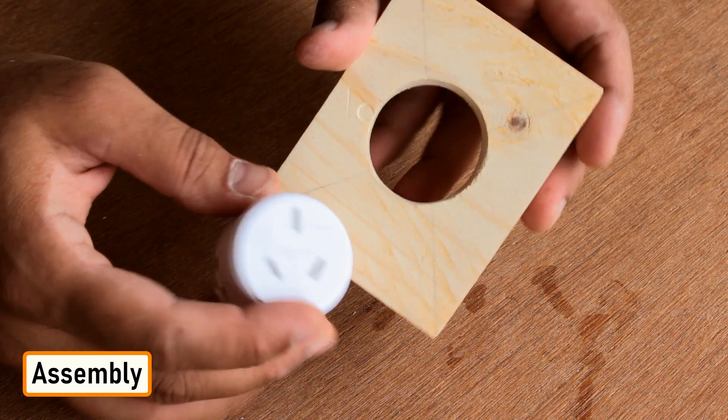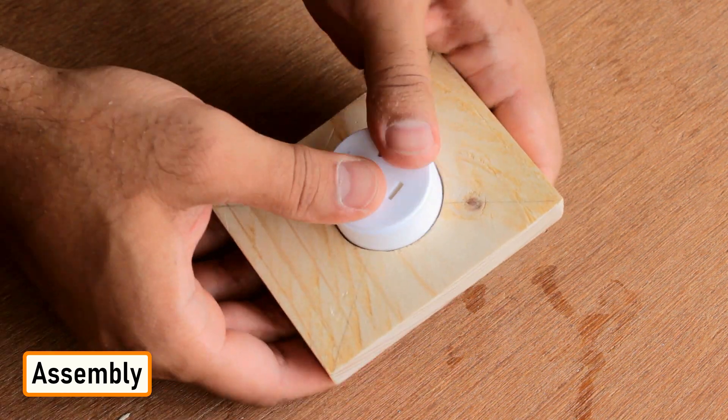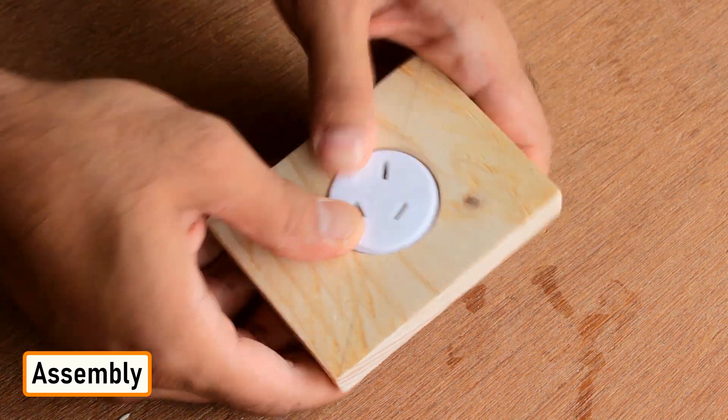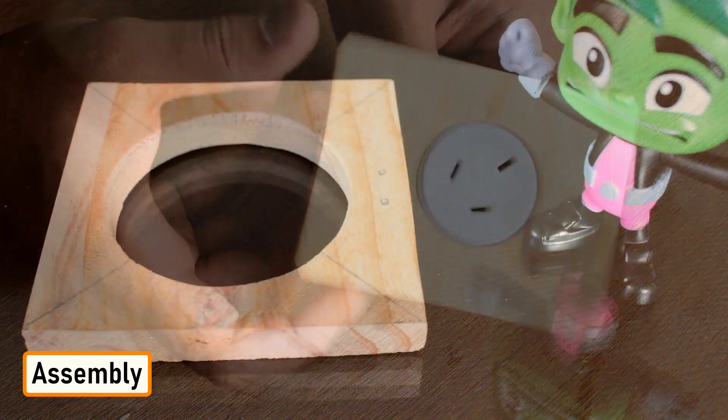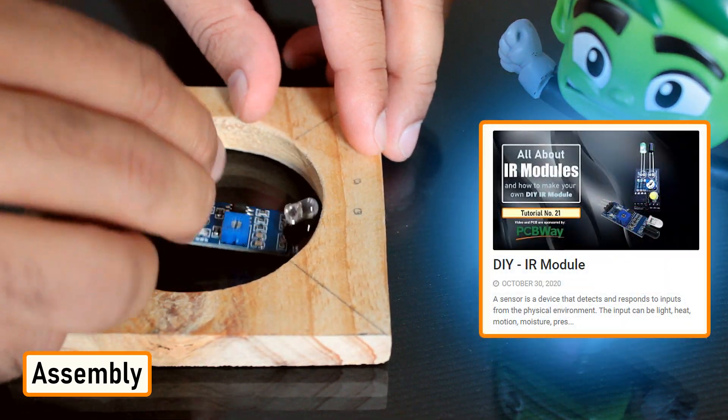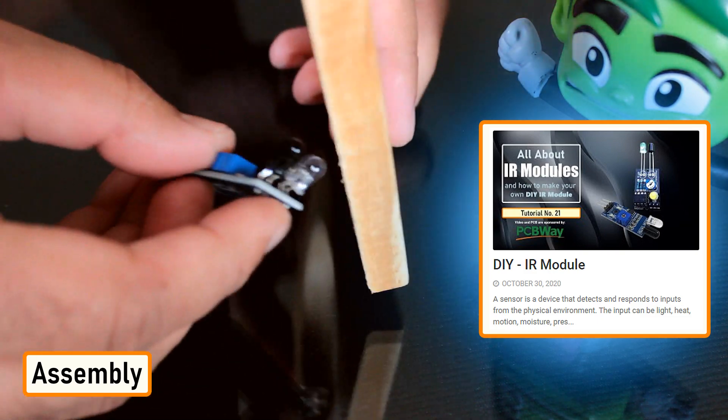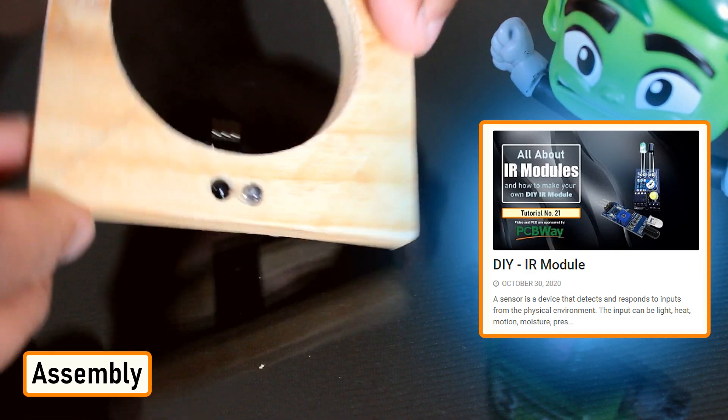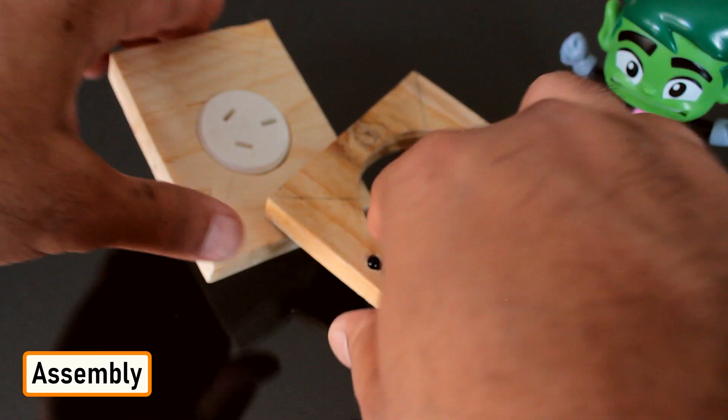Once all the sides were ready, it was time for me to join them all together. First of all, I'm getting the two sides ready by gluing the power sockets to the hole. Next, I drilled two more holes for the IR sensor. If you want to know more about IR sensors, please check out my tutorial number 21 DIY IR module.